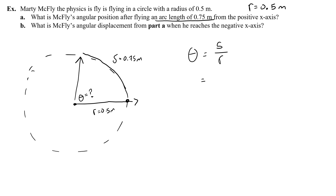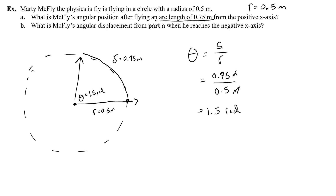So theta is going to be the arc length s divided by the radius. The idea is I'm taking this amount of distance I've gone in a circle and dividing it into radiuses. So this is simply 0.75 over 0.5, which equals 1.5. The meters cancel out. That's why we call this a radian — it's technically unitless, just a ratio of arc length to radius. So the answer is 1.5 radians.